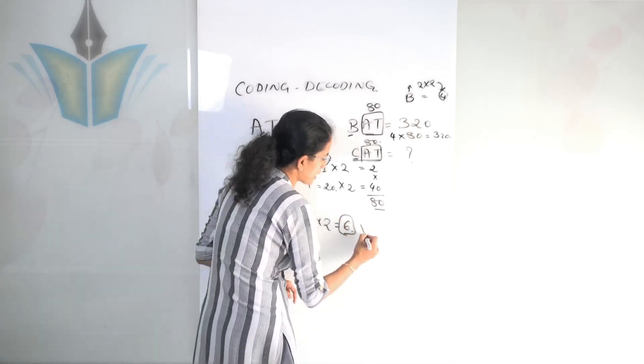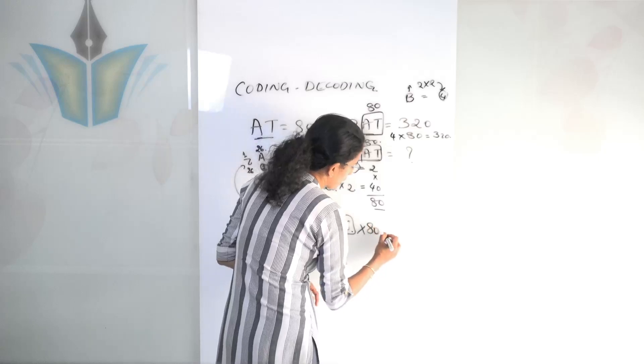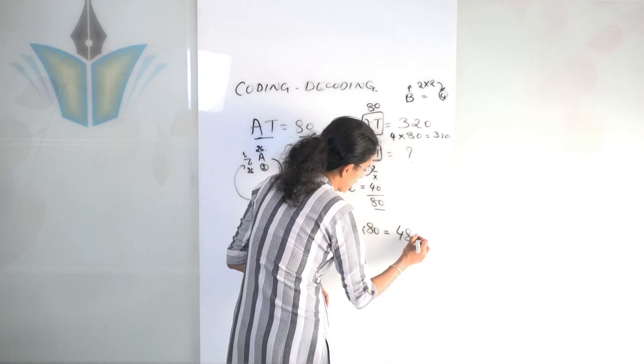Now this 6, I multiply again with 80. So 6 into 80 gives me 480.